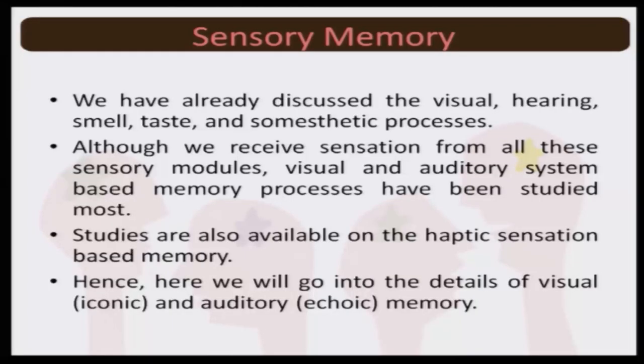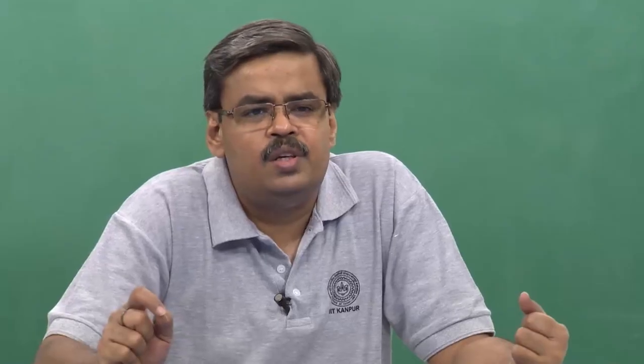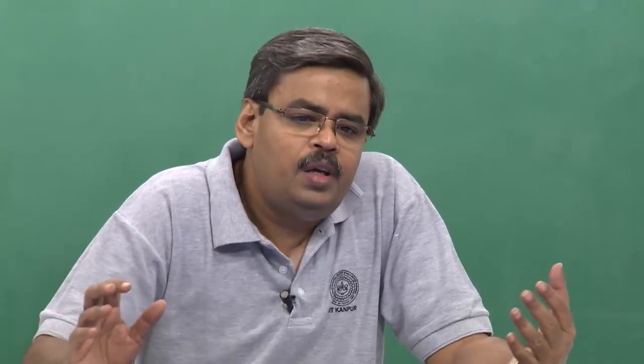Therefore, for our understanding of sensory memory, we will focus on only three types: the sensory memory having to do with vision — iconic memory; sensory memory that has to do with auditory processes — echoic memory; and sensory memory that has to do with haptic sensation. But because research has largely been guided by iconic and echoic memory, for this brief module we would be talking exclusively with respect to iconic and echoic memory. Iconic and echoic memory store visual and auditory information as part of the process involved in perception.